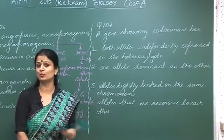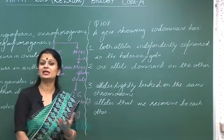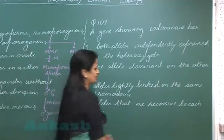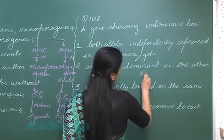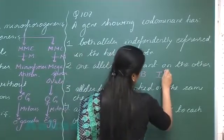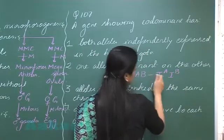In the case of co-dominance, both alleles express themselves in the heterozygous condition. One of the best examples for this is AB blood group.